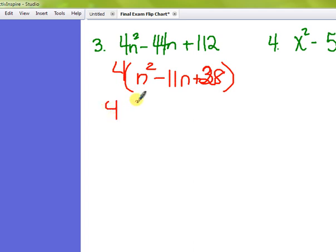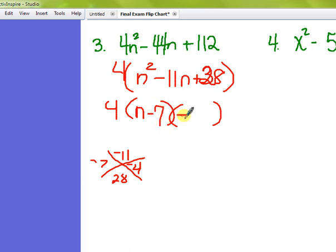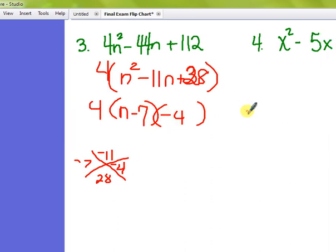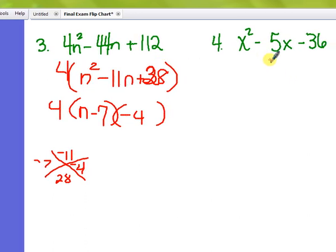Now as I look at this trinomial, I want to see if there's factors of 28 that will add up to 11. It looks like 7 and 4 work, both of them negative. That will give you your negative 11 in the middle term. So this would be n minus 7, n minus 4. This is where we're going to stop because the question doesn't say to solve it, just to factor it.